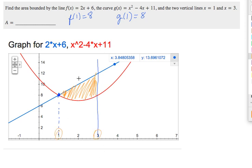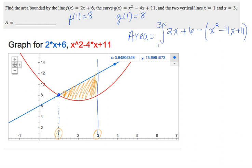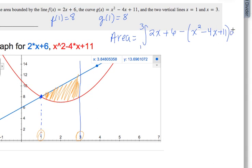And you do top function minus bottom function. The top function is this line, which is f. So in this case, the area is going to be the integral from 1 to 3 of the upper function, the line f, 2x plus 6, minus the lower function. And make sure you put a parenthesis there. So minus the parabola g, x squared minus 4x plus 11.